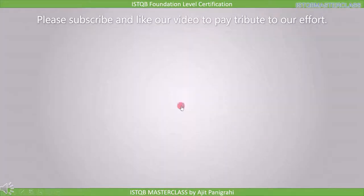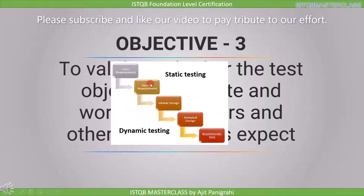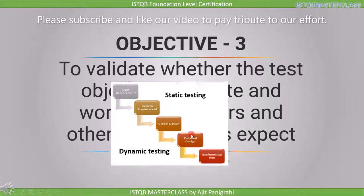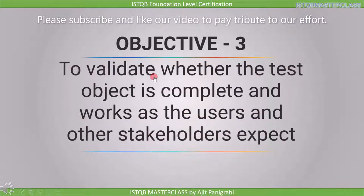The third objective is to validate whether the test object is complete and works as the user and other stakeholders expect. The test object is defined as the component or system to be tested. In the requirement stage, requirement is our test object; in the design stage, design is the test object; in the implementation stage, code is the test object. As per this objective, we provide input to the test object and check if the output fulfills the stakeholder's requirement. Since we are executing the code, this comes under validation.